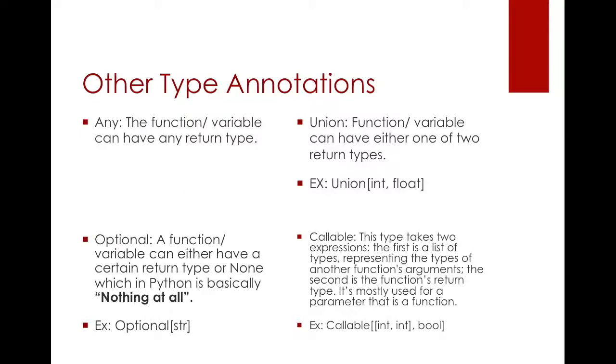There are other type annotations for a function or variable and these are advanced type annotations. You have Any. Any means that the function or variable can have any return type. So it can be either an integer or a string or float. It doesn't matter. You have Union. From the word union in math it means it can have either one of two return types. For example if you have a union of int and float that means that function or variable can either be an int or a float but it can be nothing else. So it's limited to these two.